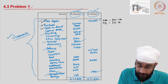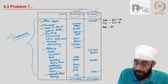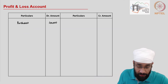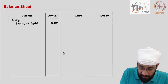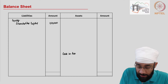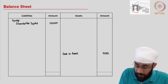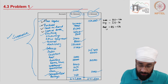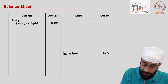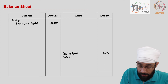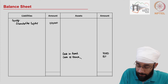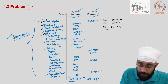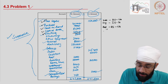Next up is cash in hand. Cash in hand is an asset; this will go to the balance sheet under the current assets subhead. The amount is 7,000, so I'll write cash in hand with amount 7,000. There is also another cash in hand entry with the same treatment for 8,500.